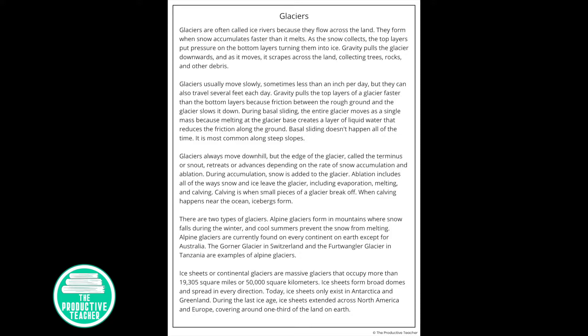Glaciers usually move slowly, sometimes less than an inch per day, but they can also travel several feet each day. Gravity pulls the top layers of a glacier faster than the bottom layers, because friction between the rough ground and the glacier slows it down.